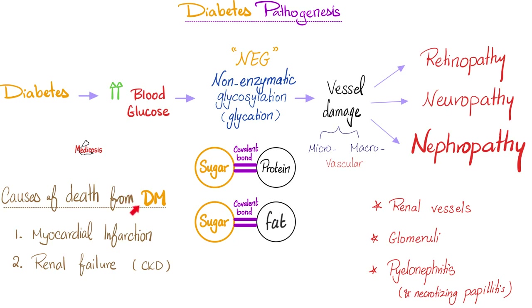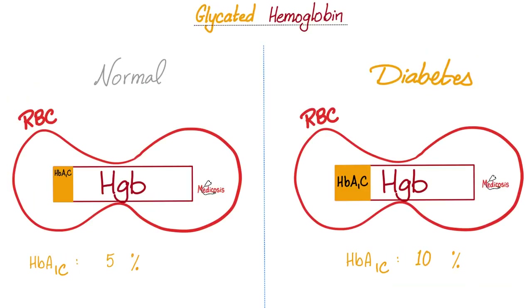Why do diabetics die? Number one, myocardial infarction. Number two, chronic kidney disease or renal failure. How does diabetes damage my kidney? It damages the kidney vessels, it damages the kidney glomeruli, and it damages the renal pelvis and the papilla.